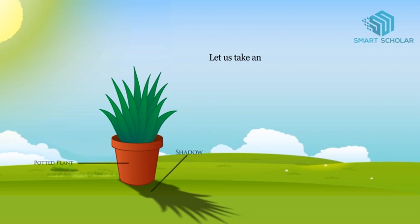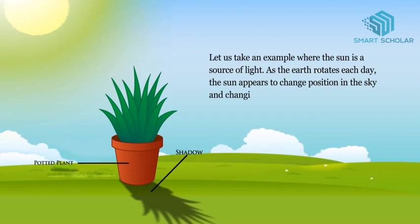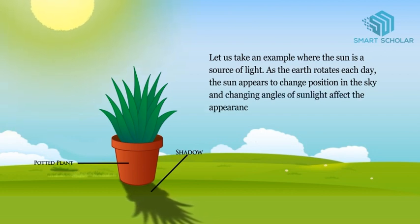Let us take an example where the sun is a source of light. As the earth rotates each day, the sun appears to change its position in the sky and changing angles of sunlight affect the appearance of shadows.